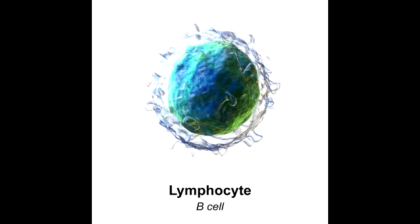What are B lymphocytes? B lymphocytes are cells that arise from the stem cells in bone marrow and they also mature in the bone marrow. They are part of the humoral immune response. To help you remember, just think B for bone marrow and B for B lymphocytes.